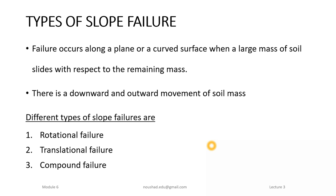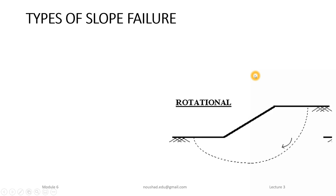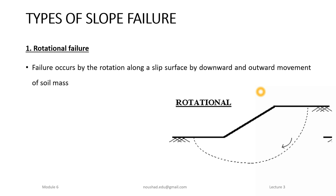Rotational failure: in this type, the soil mass undergoes circular failure. The movement of soil is in the downward and outward direction. The rotation occurs along the slip surface, and the soil mass moves downward and outward — this is rotational failure.